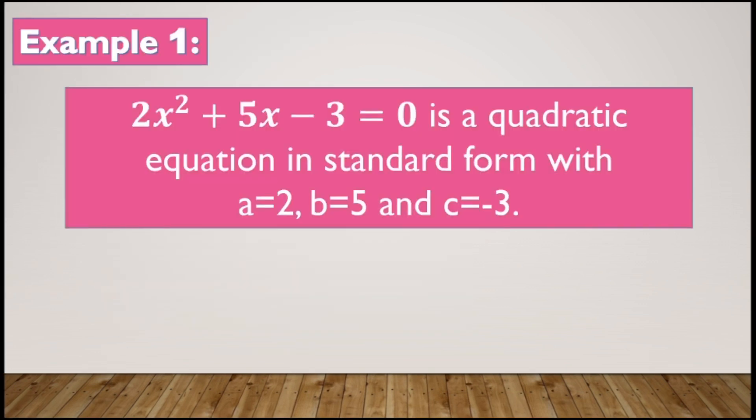Let us have example number 1: 2x squared plus 5x minus 3 is equal to 0. As we can see, the given quadratic equation is already in its standard form, with a equal to 2, b equal to 5, and c equal to negative 3.